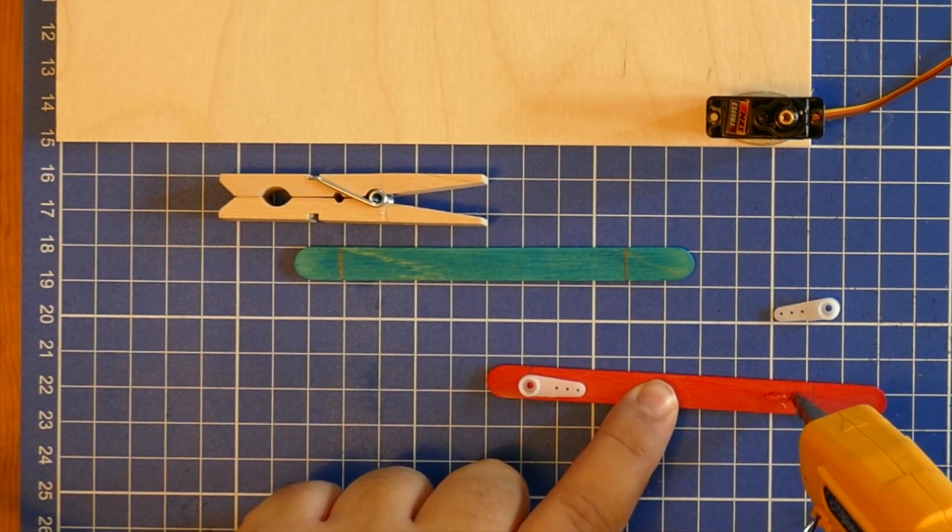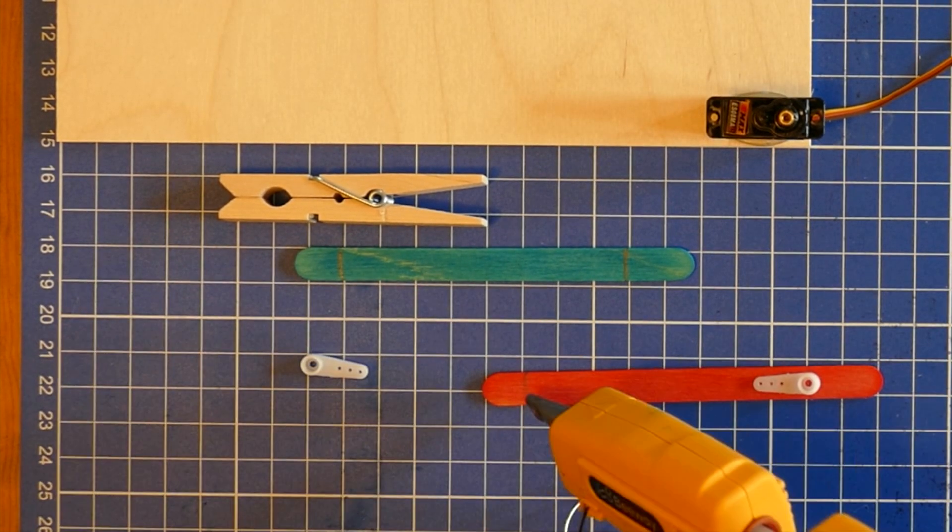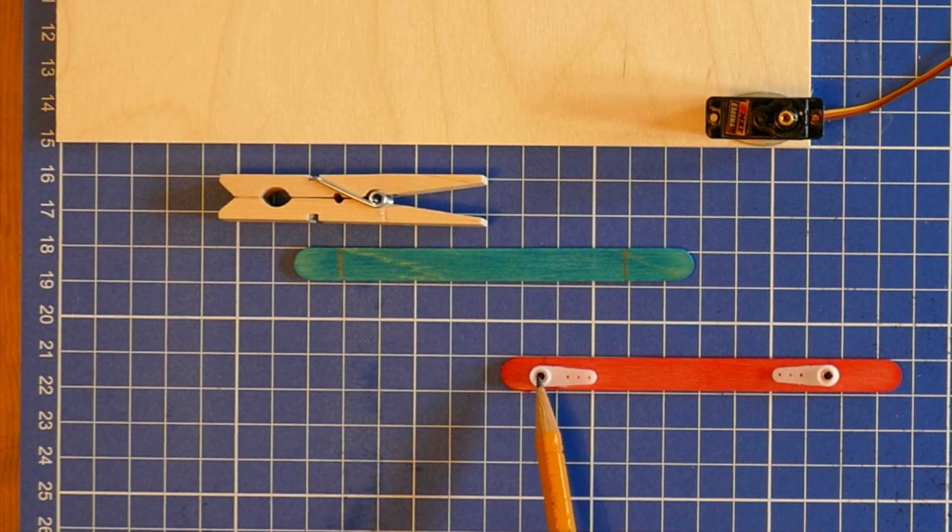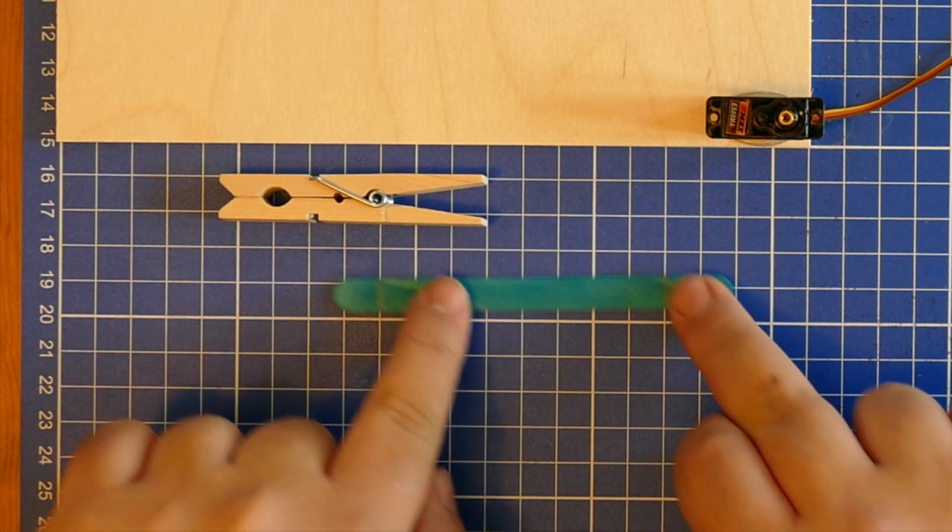For the upper part of the arm, glue two servo horns to the lolly stick. For convenience, drill through the centres of these horns and the lolly stick so as to attach and remove them from the servo more easily.